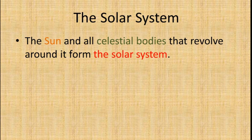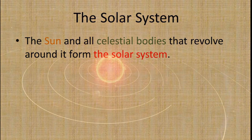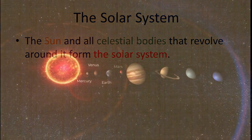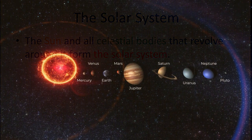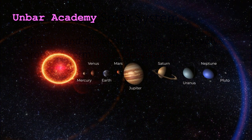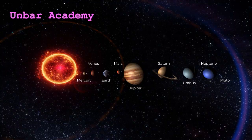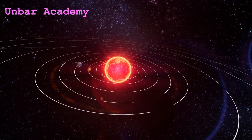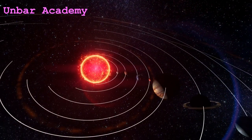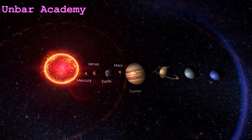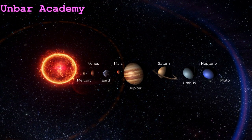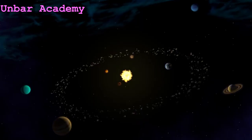The Sun and all celestial bodies that revolve around it form the solar system. Our solar system includes the Sun, eight planets including their moons, dwarf planets, and smaller bodies such as asteroids, comets, and meteors.